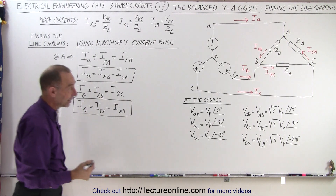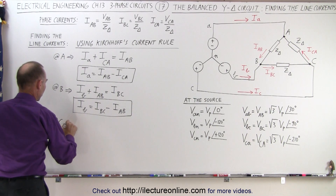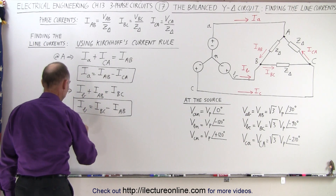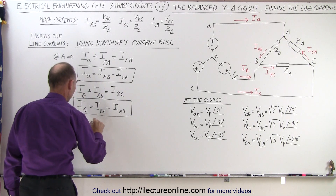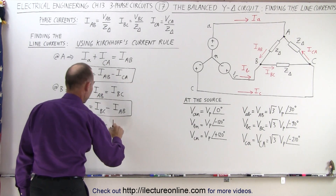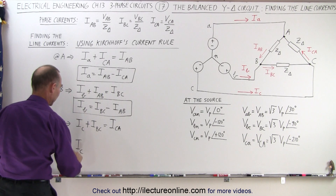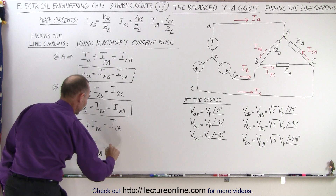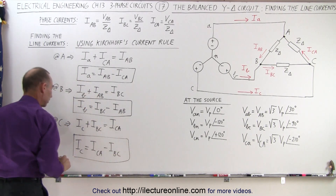Finally, at node C, the line current IC and phase current IBC enter the node, and the current leaving the node is ICA. Therefore, we can say that IC is equal to the phase current ICA minus the phase current IBC. And now we have an equation for the line current IC.